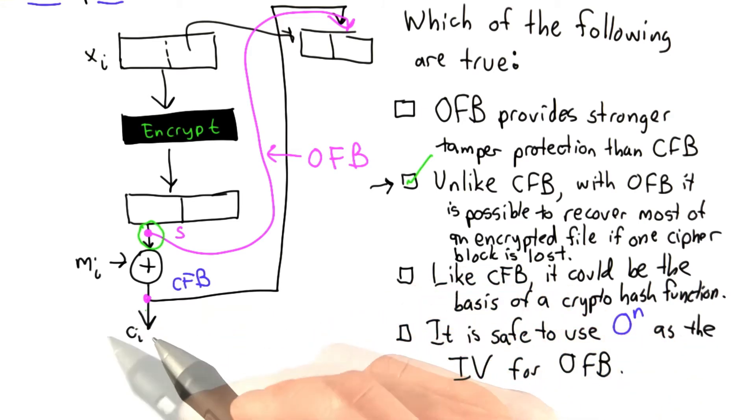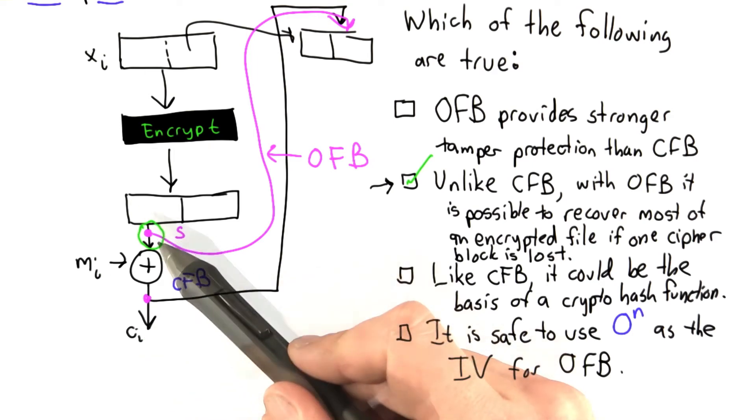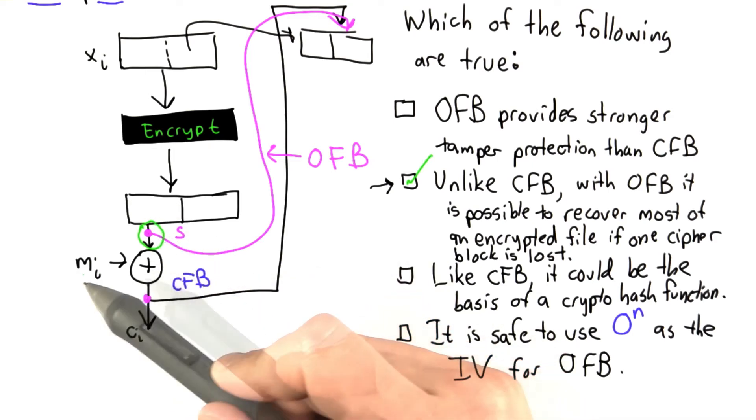Even if we're missing a cipher text block, the rest of the MIs can be XORed with the remaining cipher text blocks and our calculated inputs to find our message block.